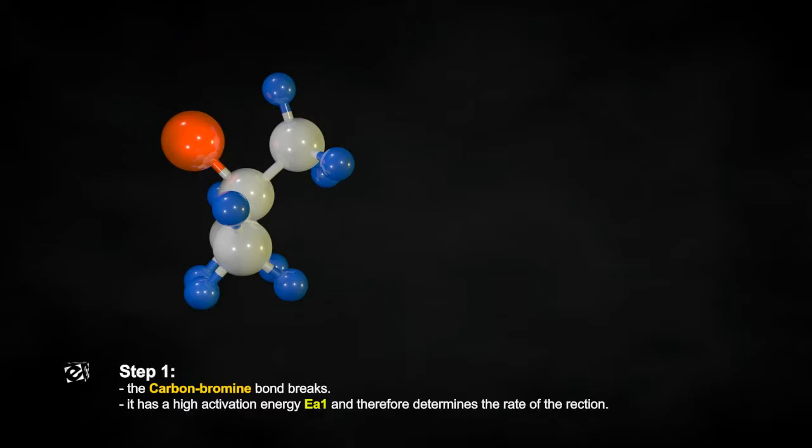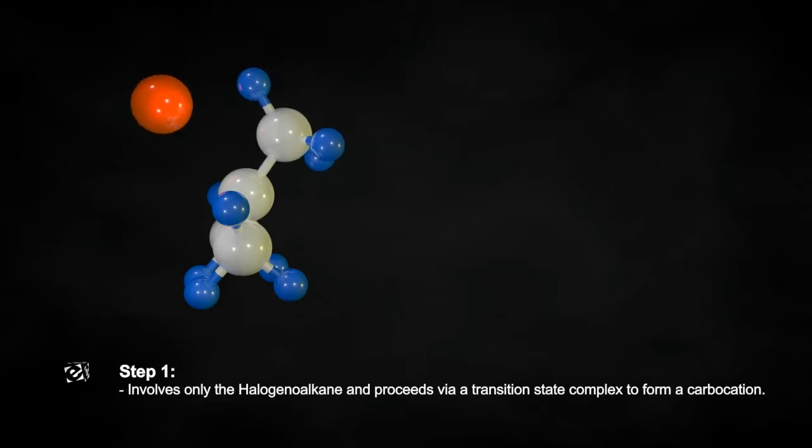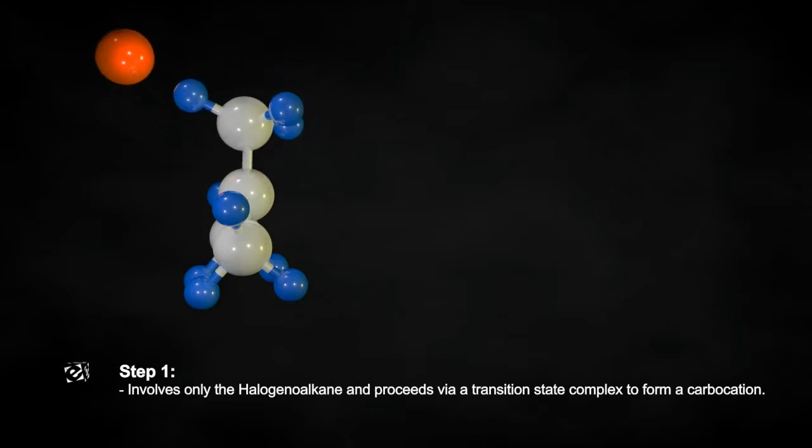The first step has a high activation energy and therefore determines the rate of the reaction. The first step involves only the halogenoalkane and proceeds via a transition state complex to form a carbocation.